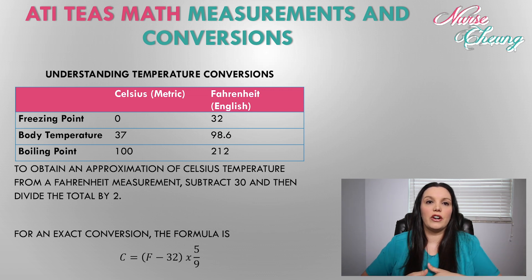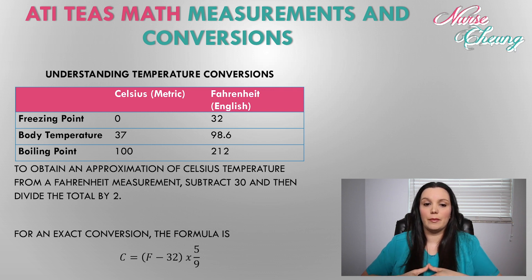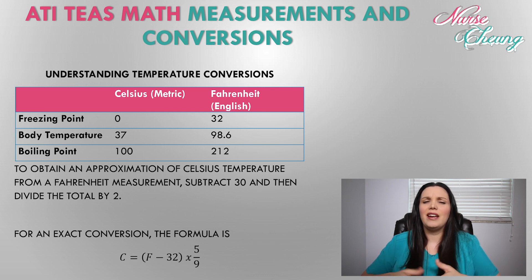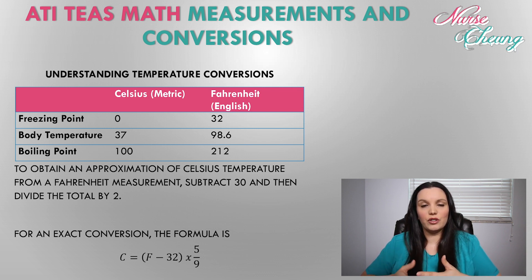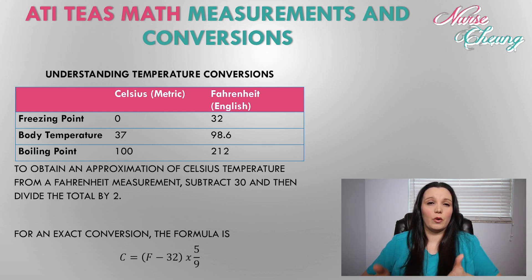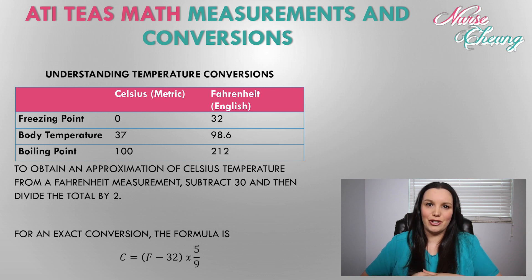One of the most common tasks in healthcare is converting between Celsius and Fahrenheit for a patient's body temperature. To get an approximation of Celsius from Fahrenheit, subtract 30 from the Fahrenheit measurement and divide by two. There is a more precise equation — C = (F − 32) × 5/9 — but for the ATITs, the subtract-30-and-divide-by-two approximation is the easiest approach.